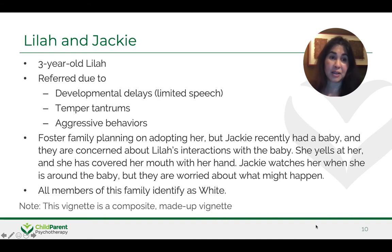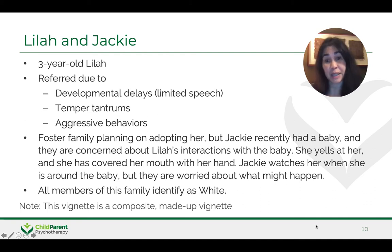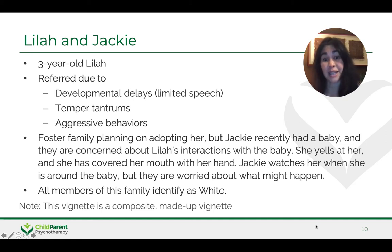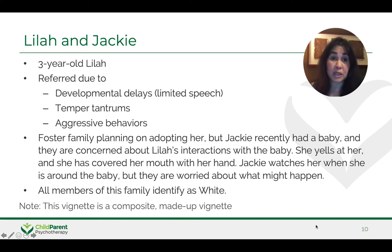This is Lila and Jackie. Three-year-old Lila is referred by her pediatrician due to developmental delays—her speech is very limited—as well as temper tantrums and aggressive behaviors. Jackie is her foster mom. The family is planning on adopting her, but Jackie recently had a baby after thinking she couldn't have a child. They're very concerned about Lila's interactions with the baby—they've seen her yell at her and cover her mouth with her hand. Jackie watches her when she's around the baby, but they're worried about what might happen. As Jackie says, 'I can't always be around to watch her. I don't know if I can continue this way.' All the members of this family identify as white.